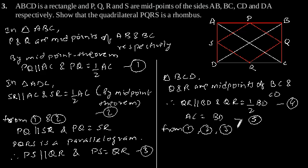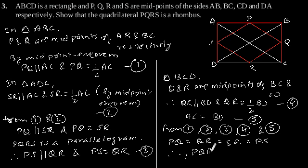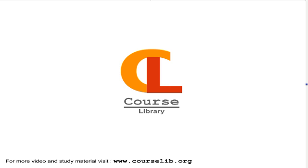Now from equations 1, 2, 3, 4, and equation 5, we can say that PQ is equal to QR, which is equal to SR, which is equal to PS. Therefore we can say that PQRS is a rhombus, as proved.